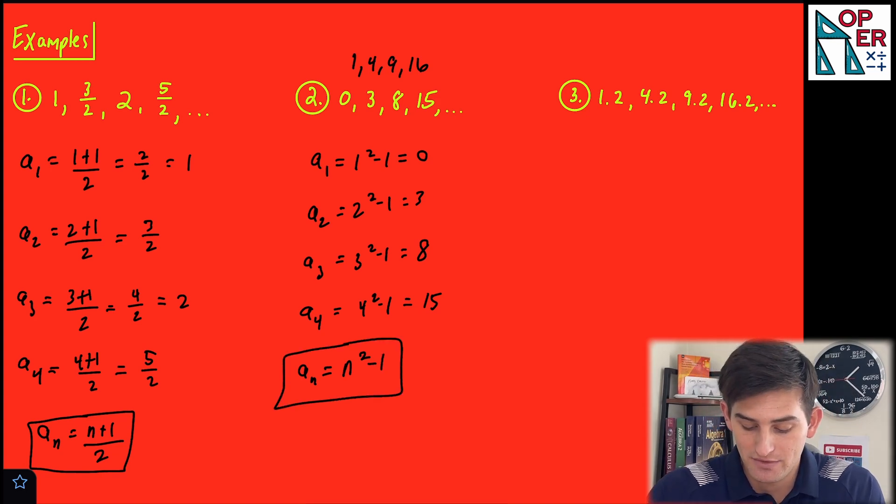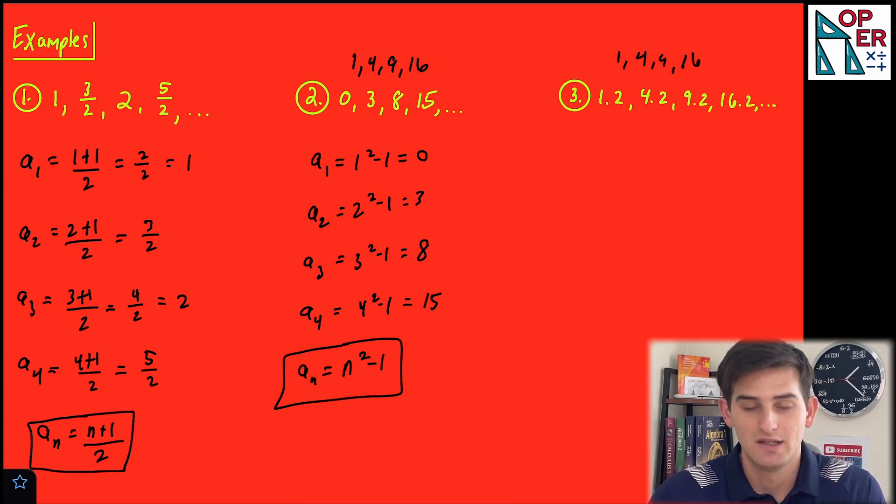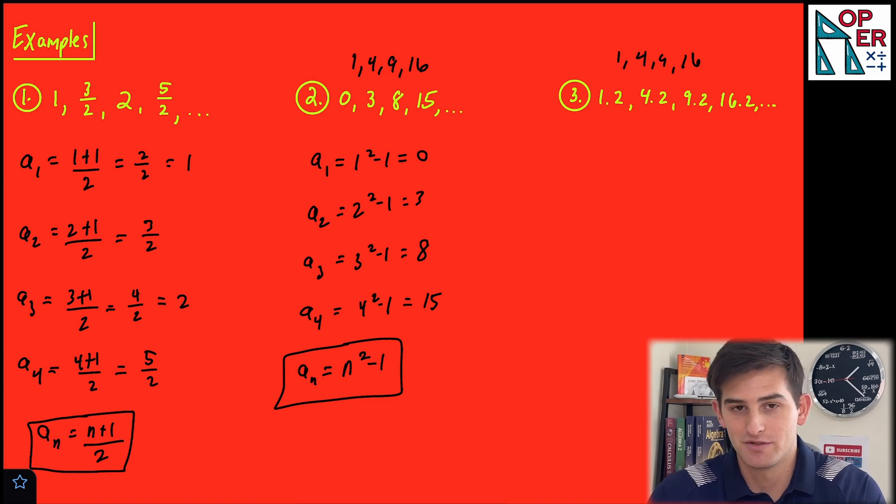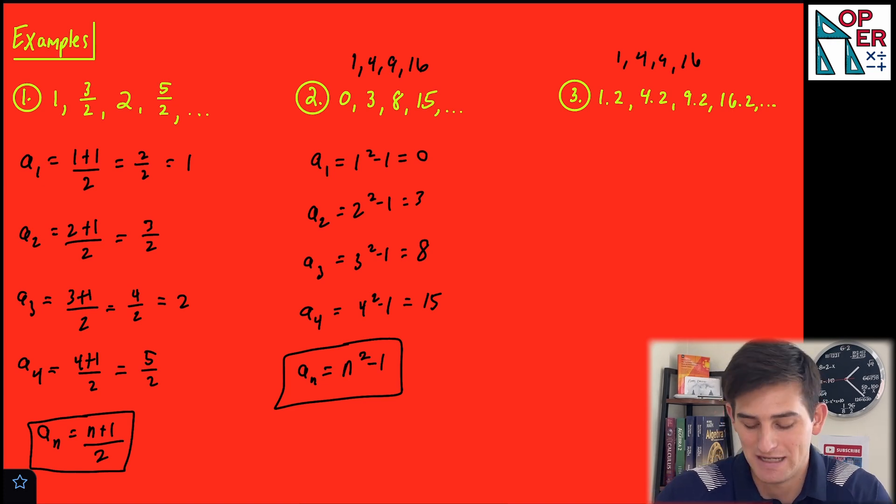And lastly, number 3. Notice what we do see here. What if this was 1, 4, 9, and 16? Okay, then we're just squaring our numbers. Well, we have that, but it's 0.2 at the end, right? So we're just adding 0.2 as we square.